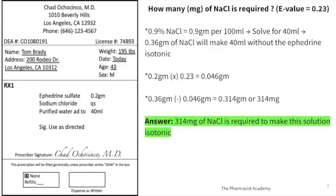Here we have a prescription asking you to make ephedrine sulfate in 40 mL of purified water, and you want to make it isotonic. The question asks how many milligrams of sodium chloride are required, and the E value of ephedrine sulfate is 0.23. The first thing you always want to do is determine how much sodium chloride you would need if there was nothing else in the solution. For a 40 mL total volume, following the 0.9% strength — 0.9 grams per 100 mL — you would need 0.36 grams of sodium chloride to make it isotonic.